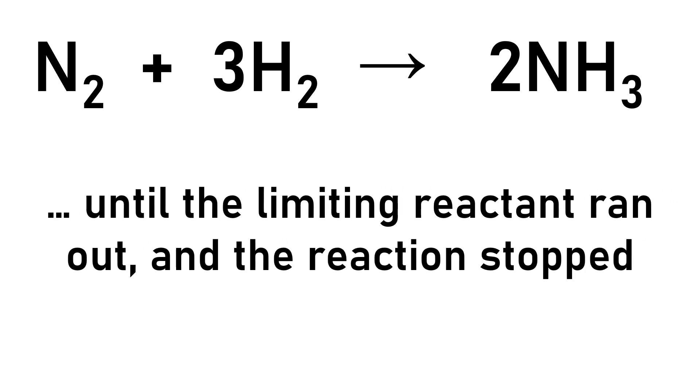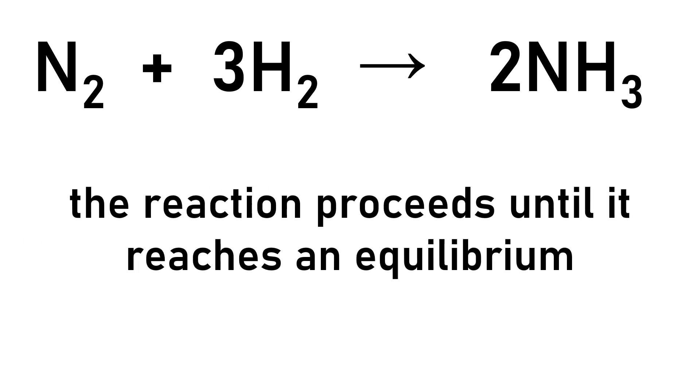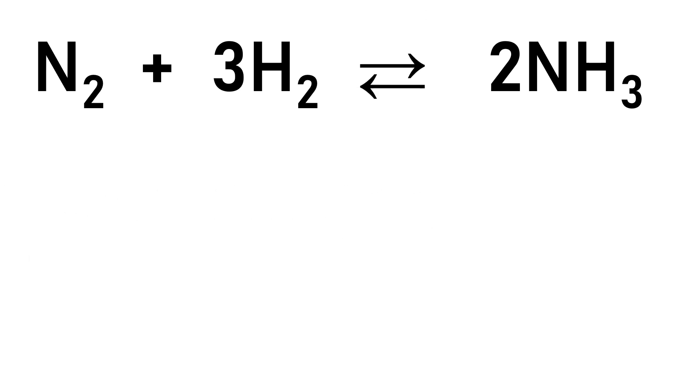This does happen, but often times the reaction proceeds until it reaches an equilibrium. When a system reaches equilibrium, we change the yield arrow into a double arrow to represent the equilibrium state.